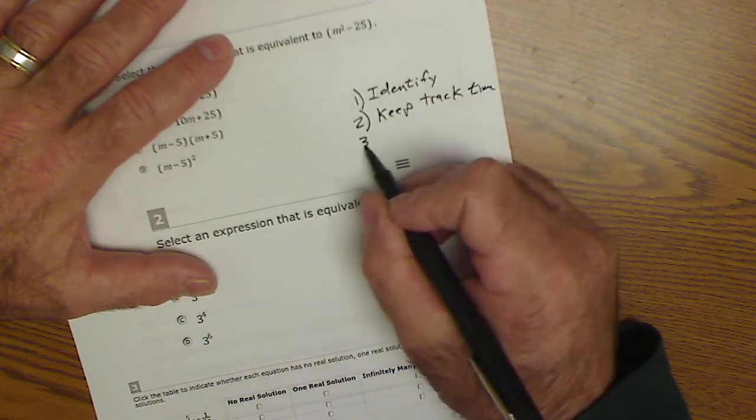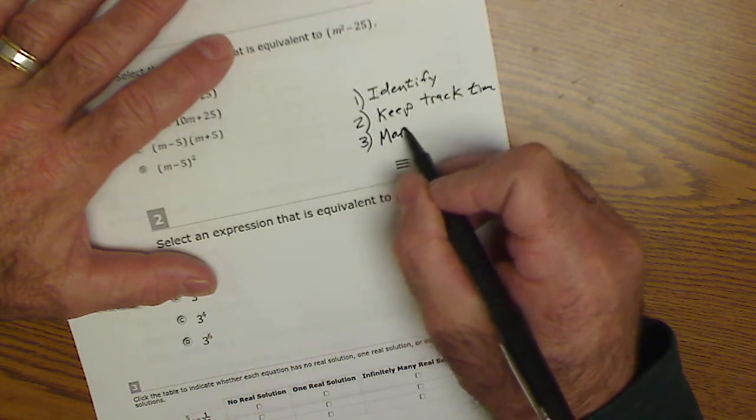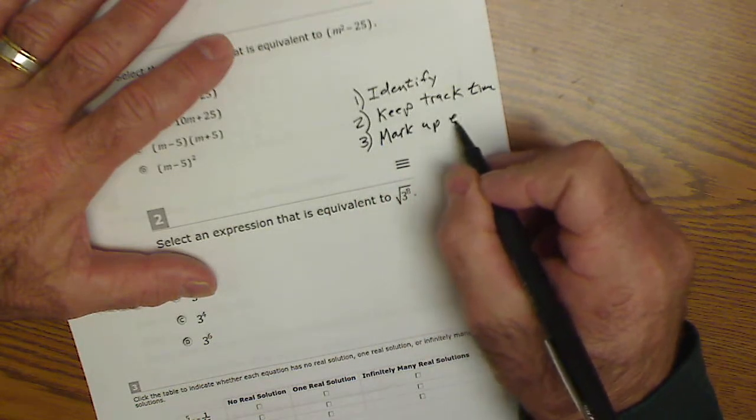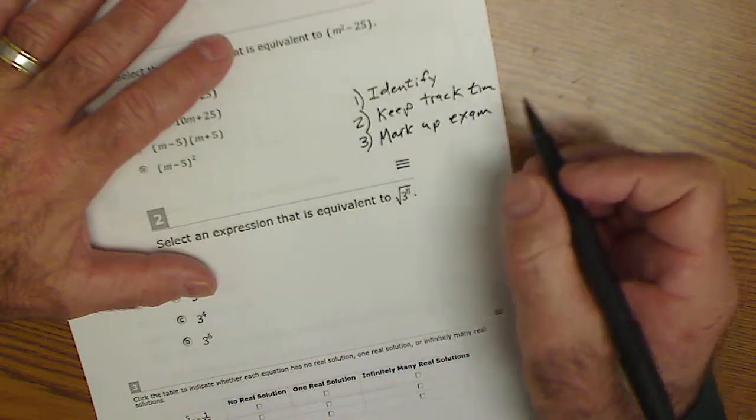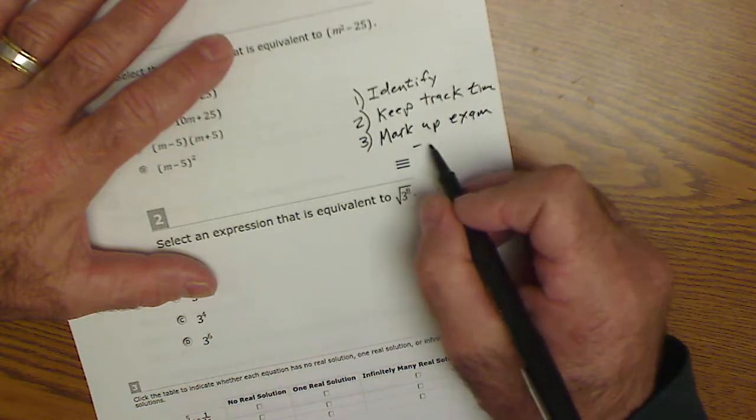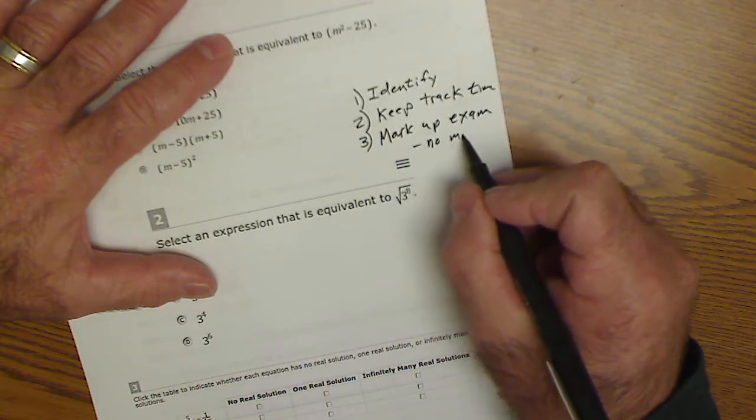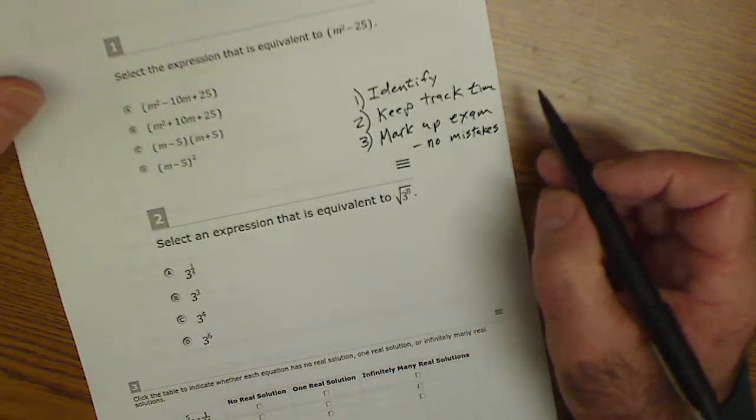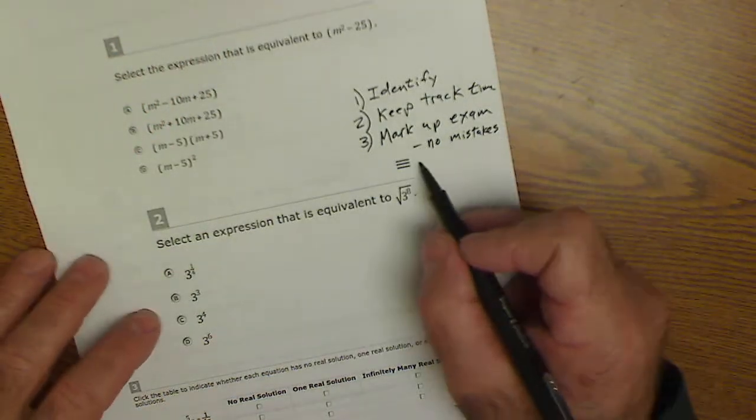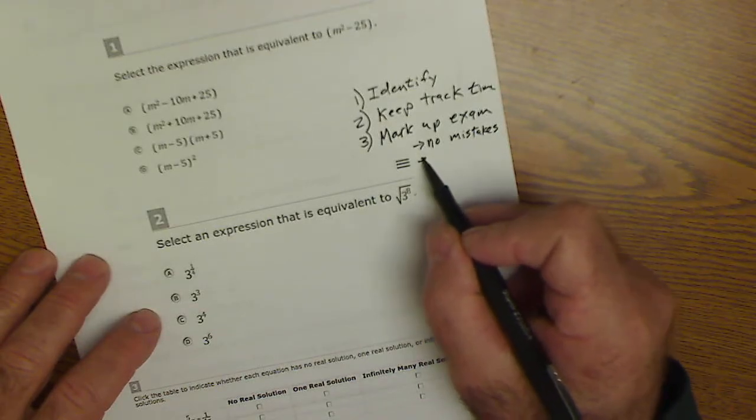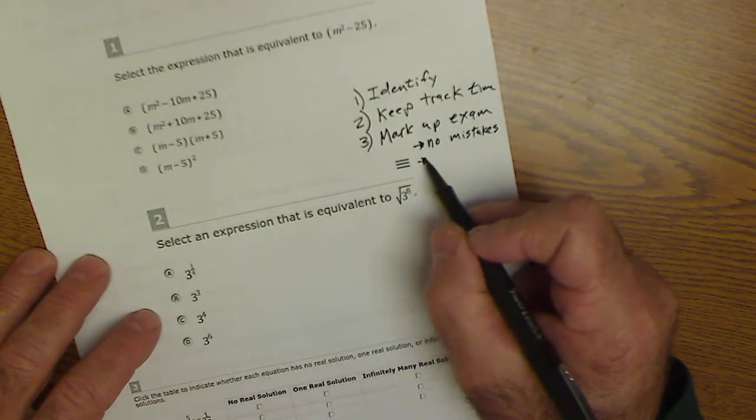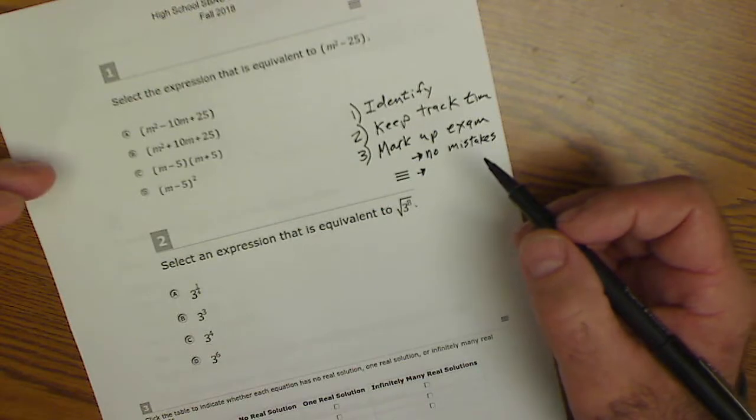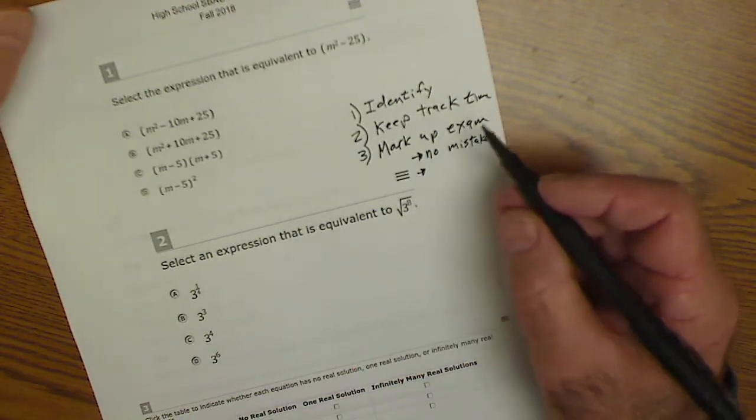And thirdly, mark up the exam as much as possible. And that's for two reasons. The first reason is so you don't make any careless mistakes. As you mark it up, you highlight important ideas and what you're doing. And the second reason, when you come back to it, if you move on and then want to come back to that problem, all your work's there so you don't have to start it all over again.